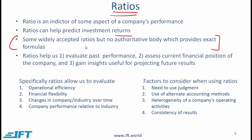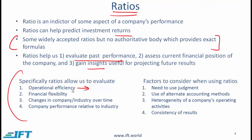As an analyst you need to know exactly what formula you are using and its exact interpretation. It is also extremely important that when making comparisons between companies or the same company over time, you are consistent in the use of your formulas. Ratios help us evaluate past performance, assess the current financial position of a company, and gain insight useful in projecting future results. Specifically, activity ratios allow us to evaluate the operational efficiency of a company — how efficiently it is using its assets, collecting receivables, and so on.